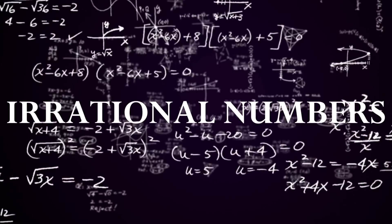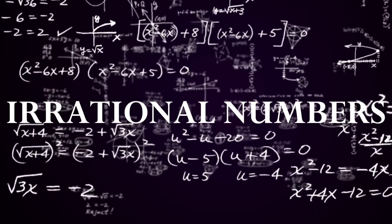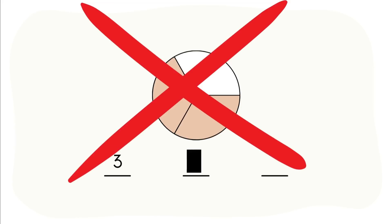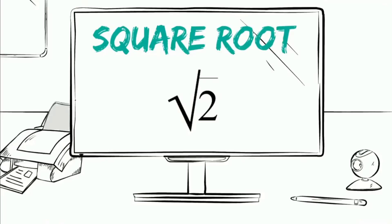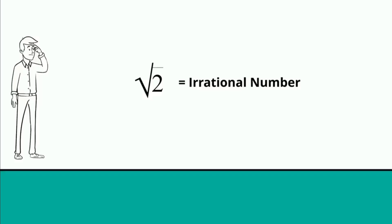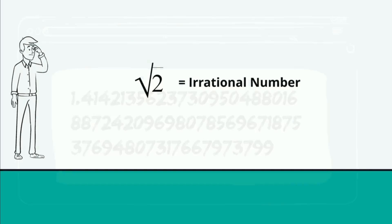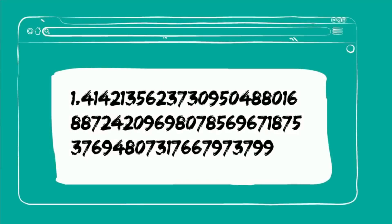In a mathematical context, an irrational number is a number that cannot be expressed as a fraction. For example, the square root of 2 and Pi have a value that goes on for a never-ending number of decimal places.